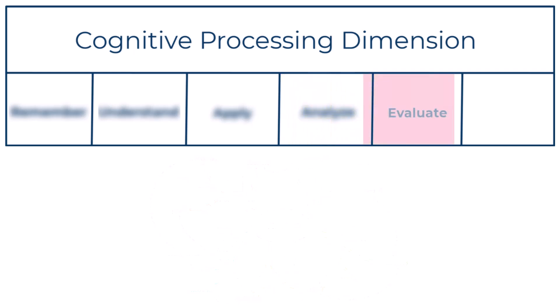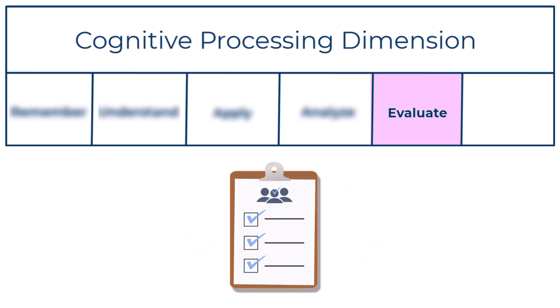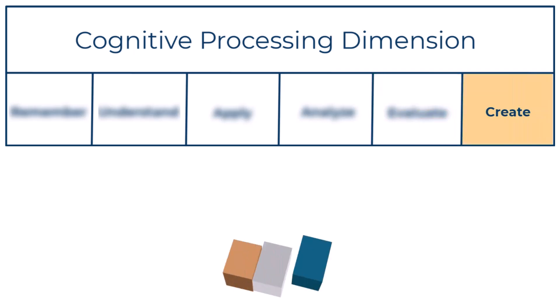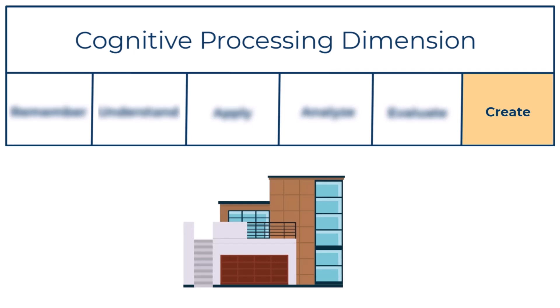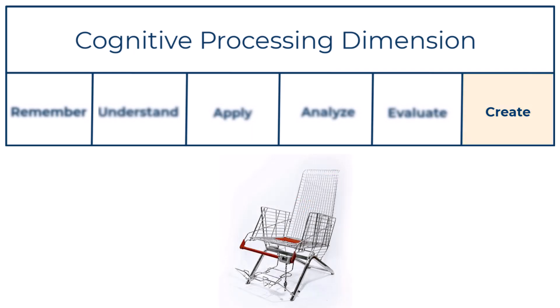The fifth level, evaluate, involves making judgments based on criteria and standards. And finally, the sixth level of complexity in the cognitive processing dimension is create. This involves putting elements together to form a coherent or functional whole, or reorganizing elements into a new pattern or structure.